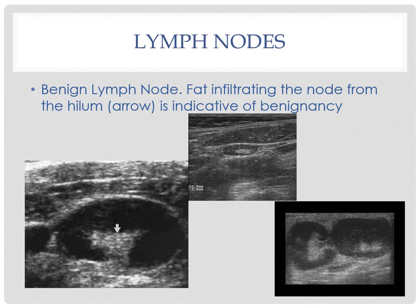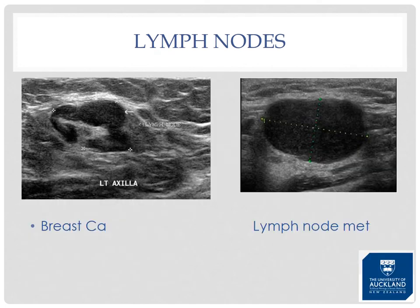Normal and reactive lymph nodes share the same ultrasound appearance — hypoechoic with an echogenic hilum. Most inflammatory processes do not change the hilar architecture. Malignant infiltration is suggested by a completely rounded hypoechoic node with obliteration of the hilum, or asymmetric thickening of the nodal cortex.